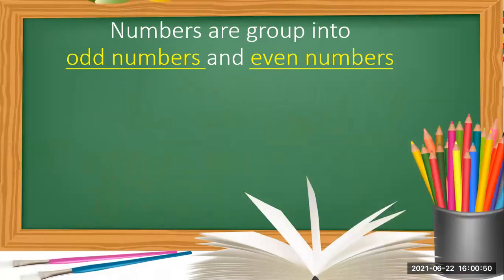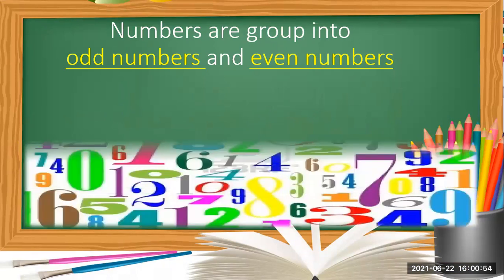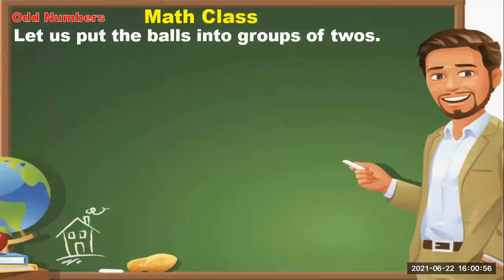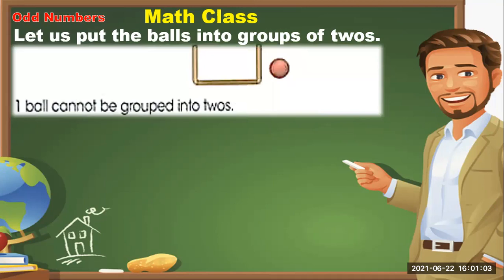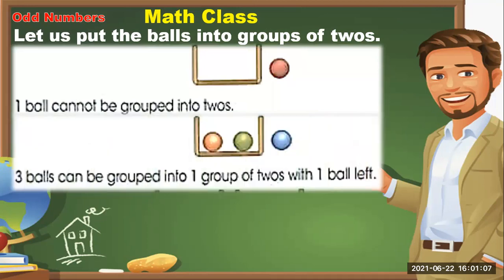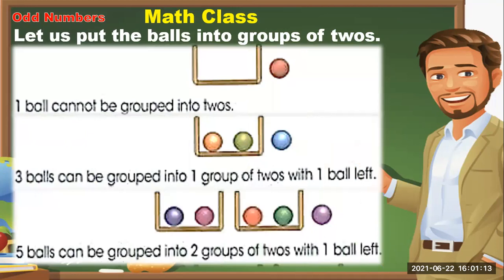Numbers are grouped into odd numbers and even numbers. For odd numbers, let us put the balls into groups of twos. One ball cannot be grouped into twos. Three balls can be grouped into one group of twos with one ball left. Five balls can be grouped into two groups of twos with one ball left.